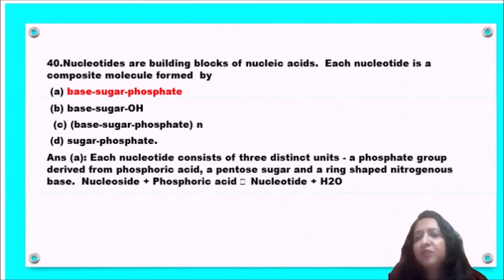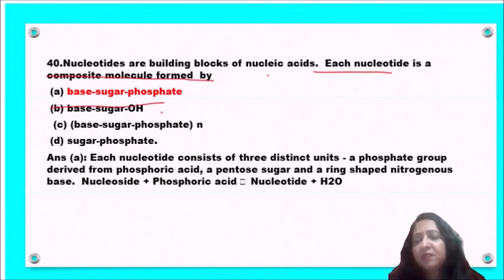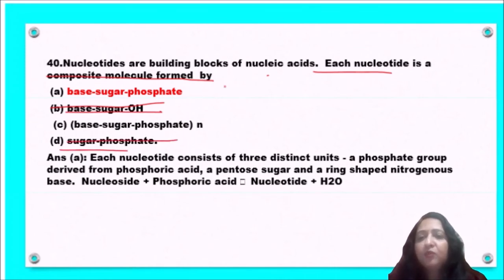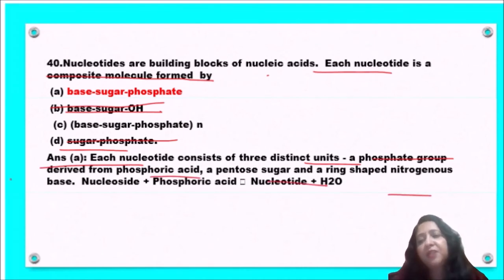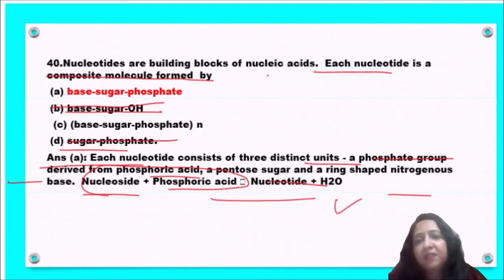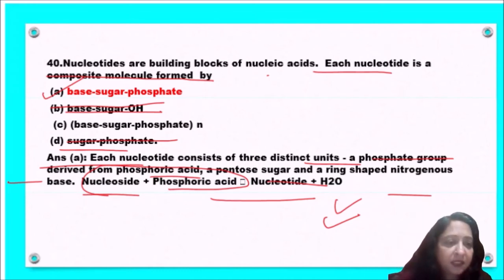Next question: nucleotides are the building blocks of nucleic acids. Each nucleotide is composed of — base and sugar phosphate; base, sugar, and OH group; base, sugar, and phosphate; or sugar and phosphate only? A nucleotide has three distinct units: a phosphate group derived from phosphoric acid, a pentose sugar, and a ring-shaped nitrogenous base. Nucleoside plus phosphoric acid forms a nucleotide plus water. So option A, base + sugar + phosphate, is the correct answer.